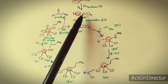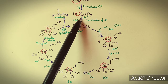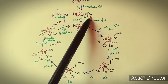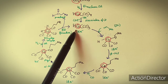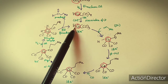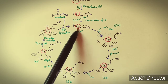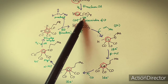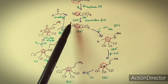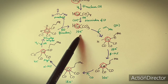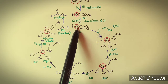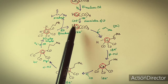HCo(CO)₄ is also not the active catalyst. From this compound, one CO will dissociate, forming the active catalyst HCo(CO)₃. This is an 18-electron species that after dissociation of carbonyl becomes a 16-electron species. Being a 16-electron species, it has one vacant site at the cobalt center, where olefin can easily coordinate.